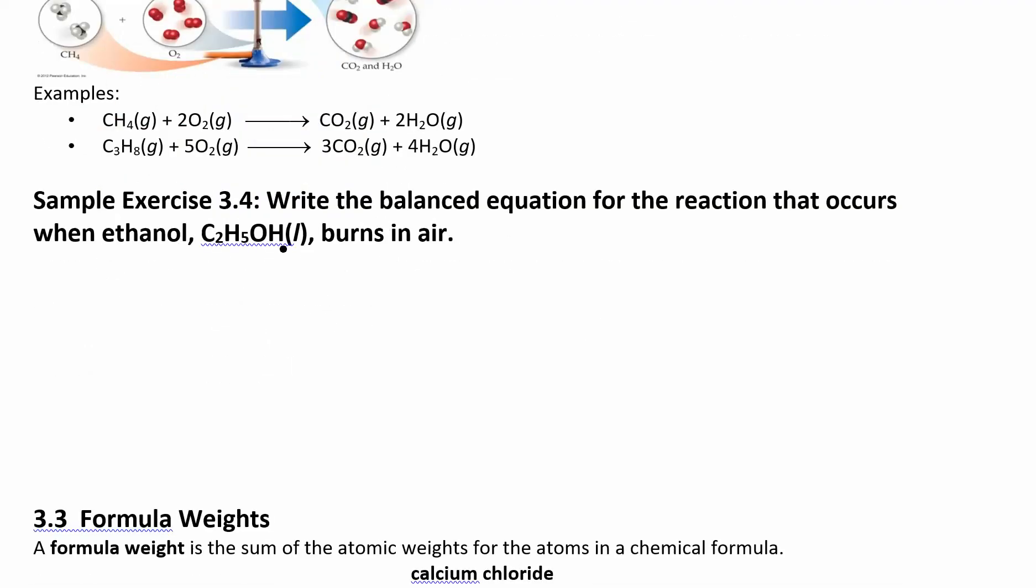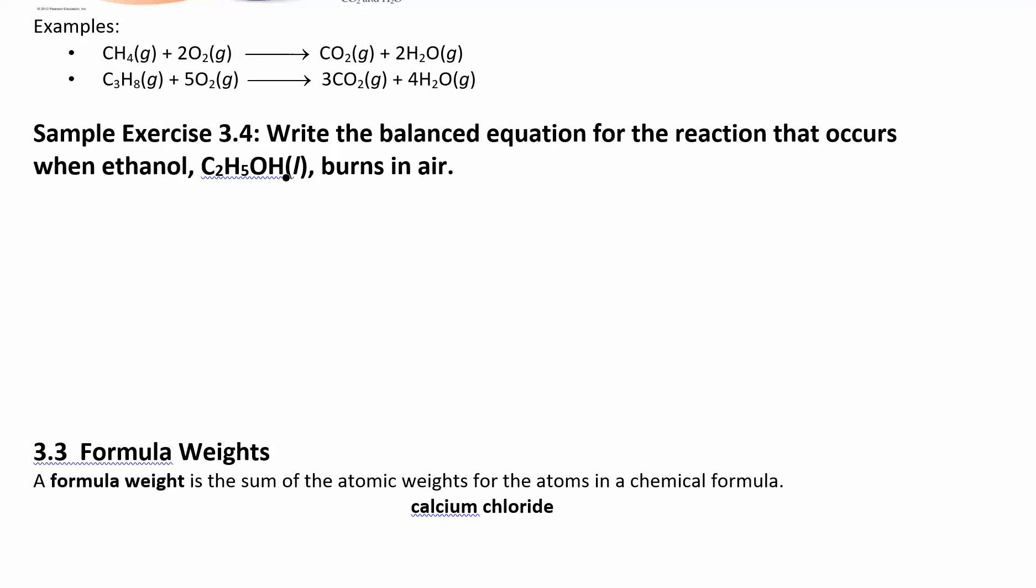Let's write the balanced equation for when ethanol burns in air. Ethanol is one of our alcohols from chapter two. It has that prefix eth, which means it has two carbons. So we have C2H5OH. We're separating that OH just so you know it's an alcohol. Burns in air means you're reacting it with oxygen and you're going to get carbon dioxide and water. This is as long as you have complete combustion. If you don't have enough oxygen, you get incomplete combustion with carbon monoxide.